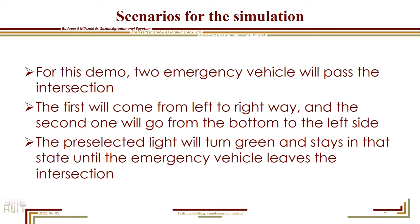In our demo, we set up two emergency vehicles on different routes. The first vehicle departs at 9 seconds from the left side and goes straight to the right. In this case, there won't be any vehicle in front of it, so just the light will turn green and the others stay red to block traffic. In the second case, the emergency vehicle starts at 67 seconds from the bottom road and makes a left turn at the intersection, where there will be vehicles directly in front of it. On the next slide, we can see how the program works in the simulation.